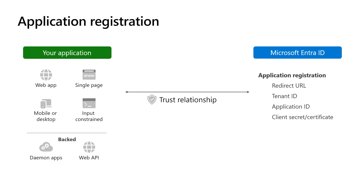When registering a web, single page, or mobile application, you should supply it with a redirect URI, which is a location where Microsoft Entra External ID redirects the user upon successful sign-in. For other non-interactive applications like web APIs or daemon apps, there's no need to provide the redirect URI. After you register your application in the Microsoft Entra External ID tenant, it will provide you with a tenant ID and application ID that uniquely identifies your application.